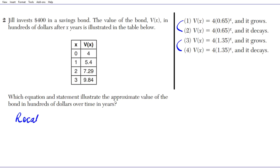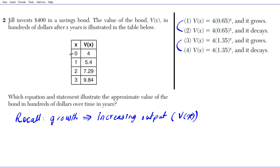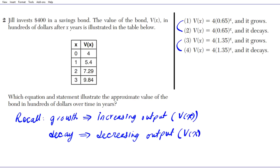Growth indicates that your output is increasing. In this case the output is v(x). Decay means that your output is decreasing — something is losing value. Decreasing output indicates decay. Now let's look at the output values in the table.